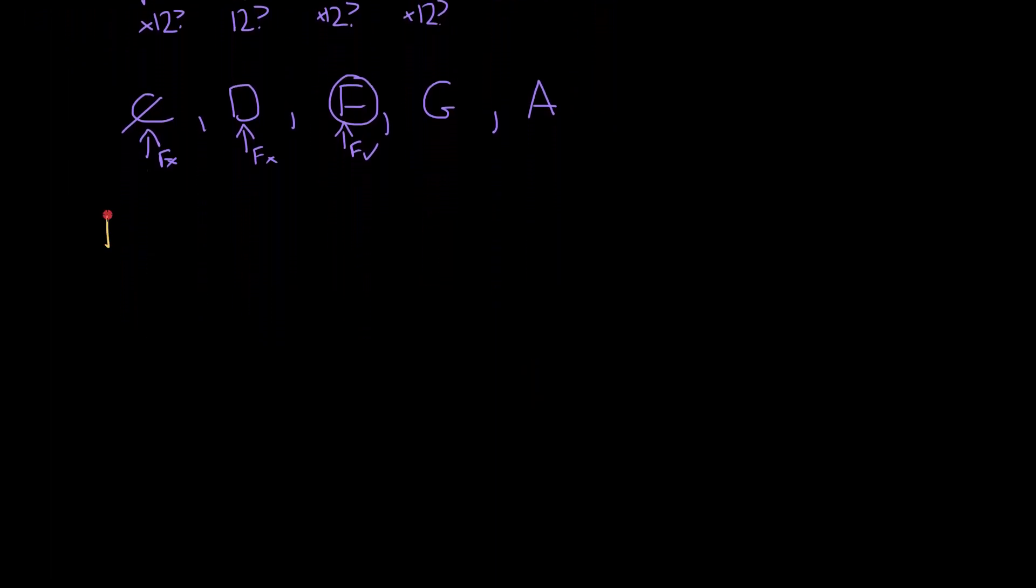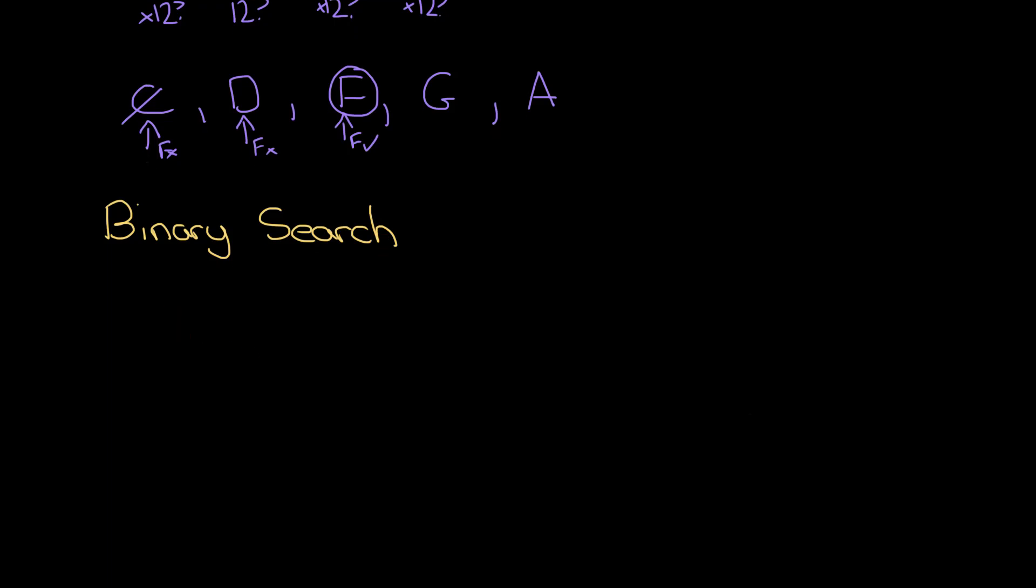There's a big problem with binary searches: even though they are really efficient and very quick, the data that you're searching has to be in order. If it isn't in order, then the whole thing doesn't work. Let me give you a sequence of numbers in order and we'll see how it plays out.